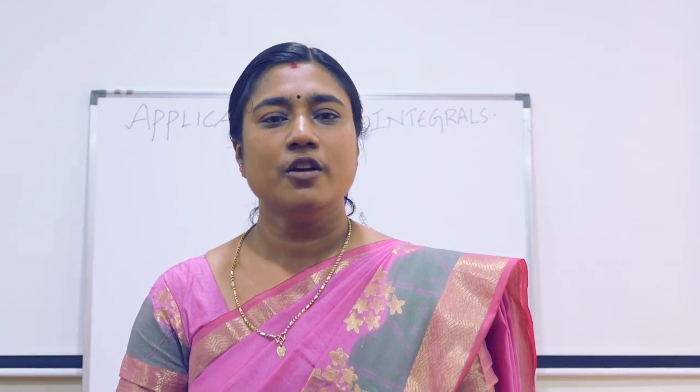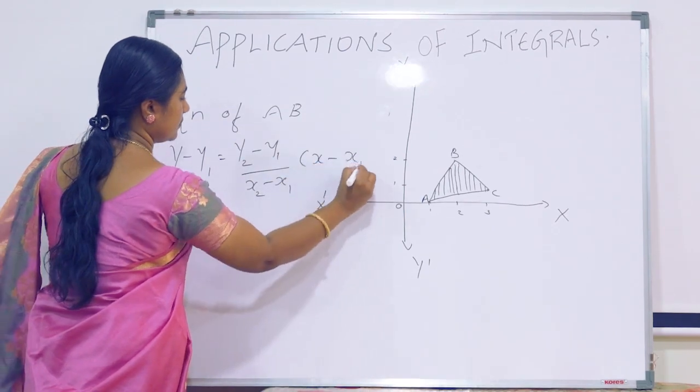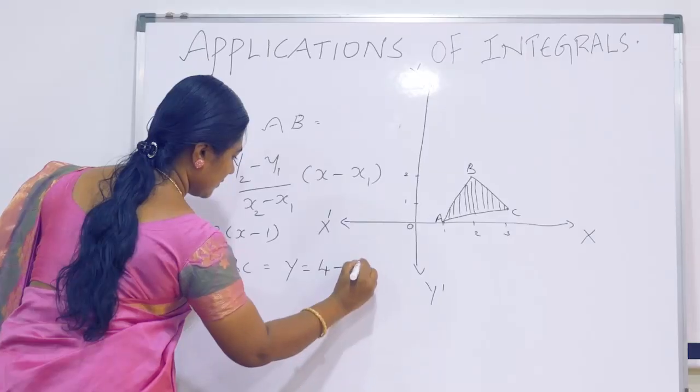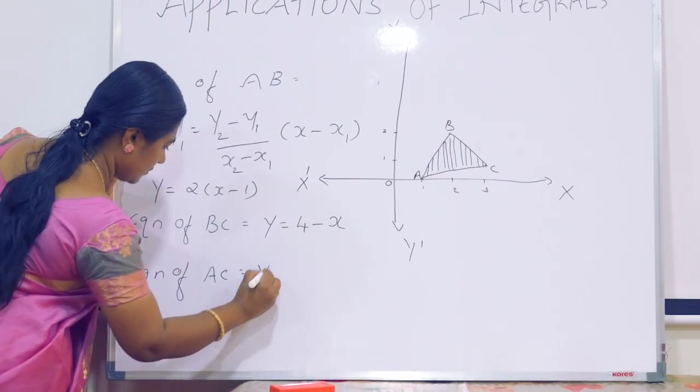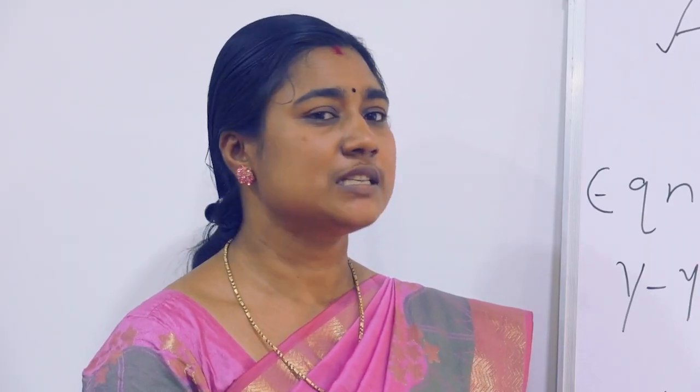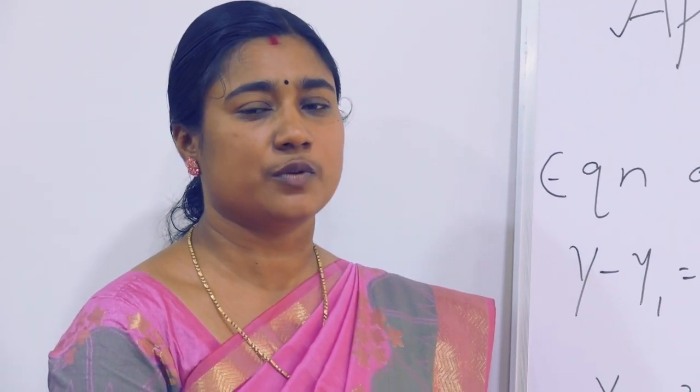First, find the equation of line AB, BC, and AC using the formula y minus y1 equals (y2 minus y1) by (x2 minus x1) times (x minus x1). Finding equation of AB using the formula, y minus y1 equals (y2 minus y1) by (x2 minus x1) times (x minus x1).